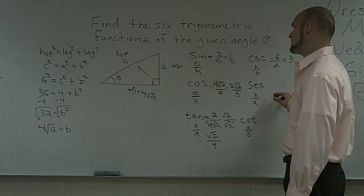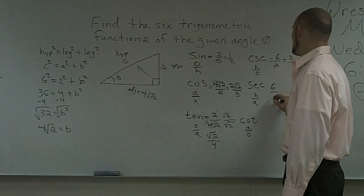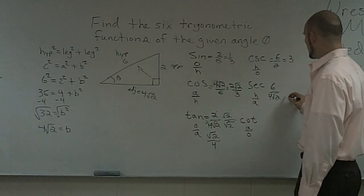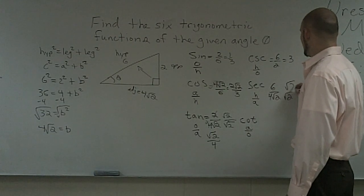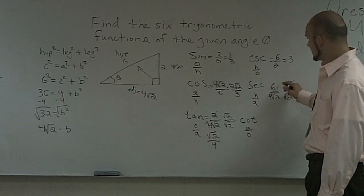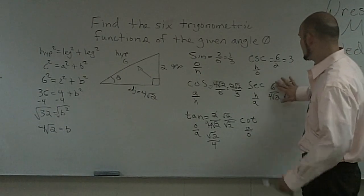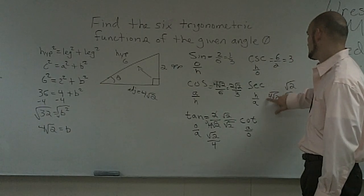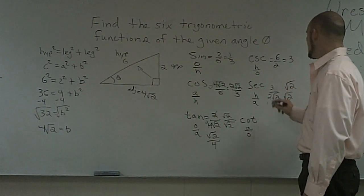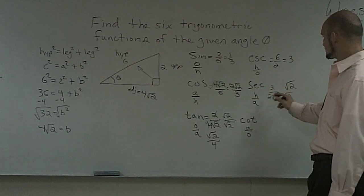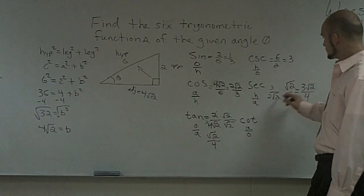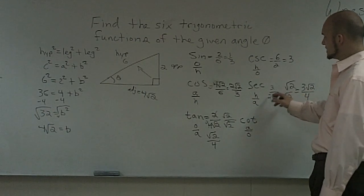My secant, which is going to be hypotenuse, which is 6, over my adjacent, which is 4 square root of 2. Again, multiply by square root of 2, rationalize the denominator on both sides. These can go ahead and get canceled out. I can reduce this down to 3 root 2 over 4. 2 times square root of 2 is 2. 2 times 2 is 4.